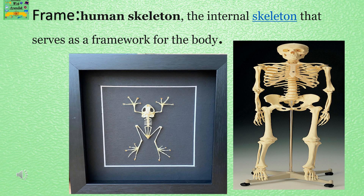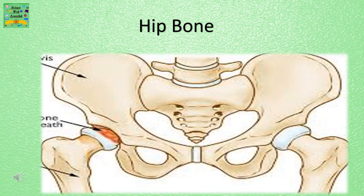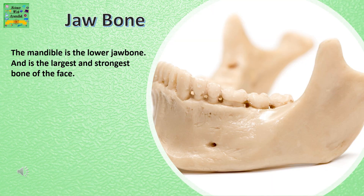Frame. The human skeleton is the internal skeleton that serves as a framework for the body. Here you can see the picture of the hip bone. The jaw bone — the mandible — is the lower jaw bone and is the largest and the strongest bone of the face.